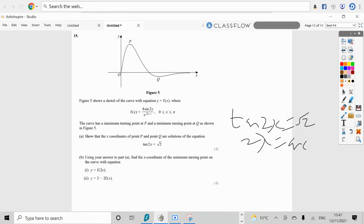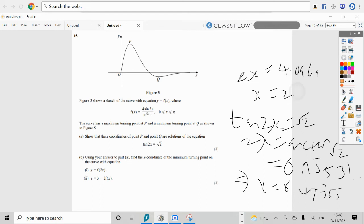So, that will mean that tan of 2x is root 2 staying that bit. So, 2x will be arctan of root 2, which I make it on the calculator to 0.955531. Keep going on. Half that I'll click on that, 0.47765. And of course the other value was 2x being equal to 4.0969. So, x is 2.0484.